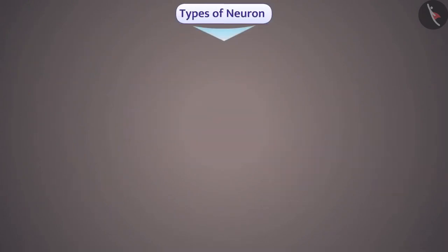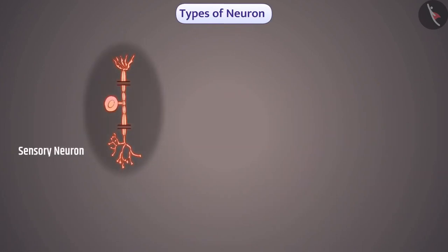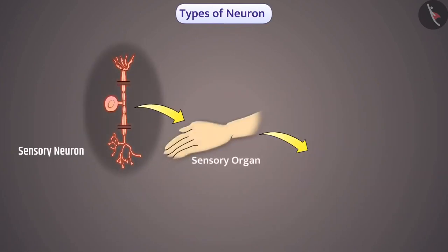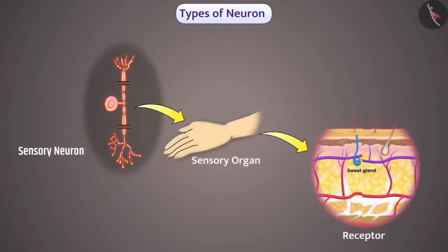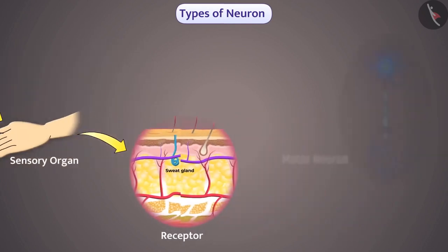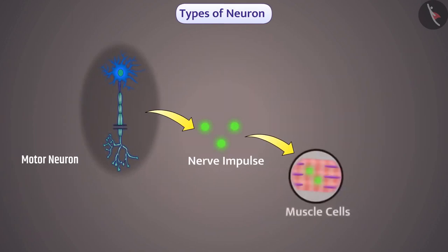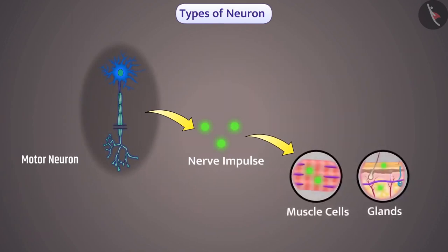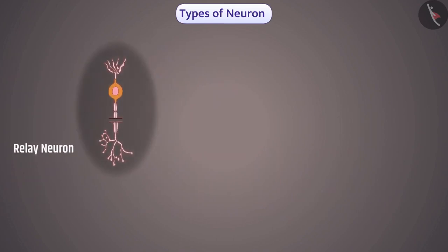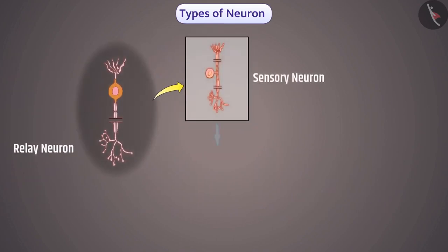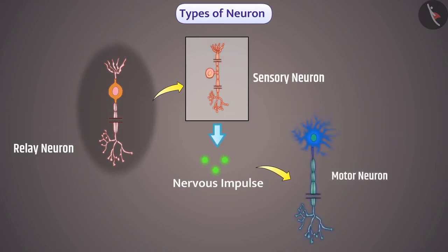Our body consists of three types of neurons. Sensory neurons obtain information from receptors present in the sensory organs. Motor neurons transport nerve impulses to muscle cells and glands. Relay neurons transport the nervous impulse from sensory neurons to motor neurons.